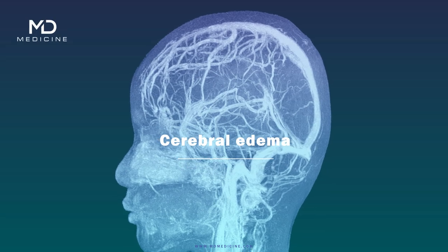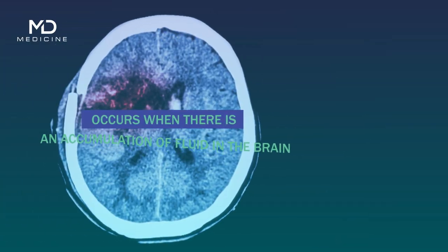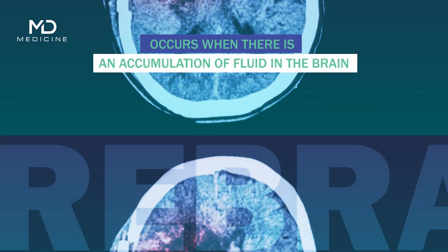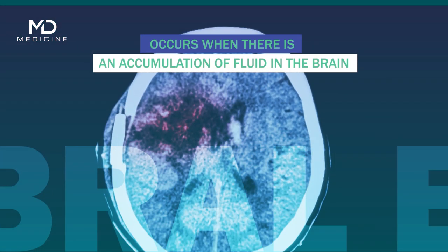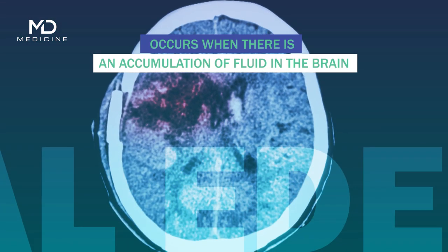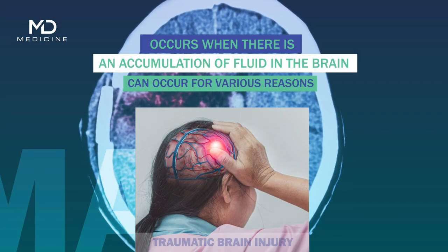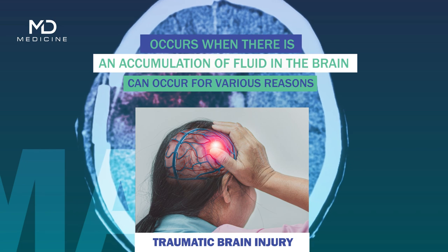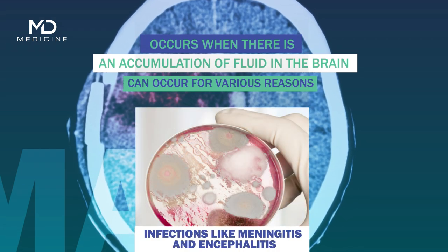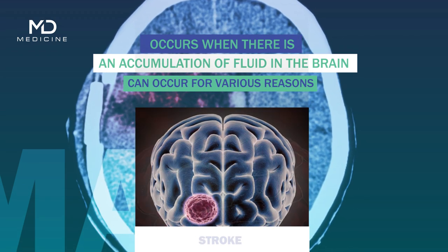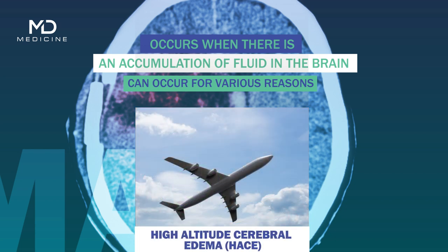Cerebral edema is a medical condition that occurs when there is an accumulation of fluid in the brain. Cerebral edema can occur for various reasons, including traumatic brain injury, infections like meningitis and encephalitis, tumors, stroke, and high altitude — a condition known as high-altitude cerebral edema, or HACE.